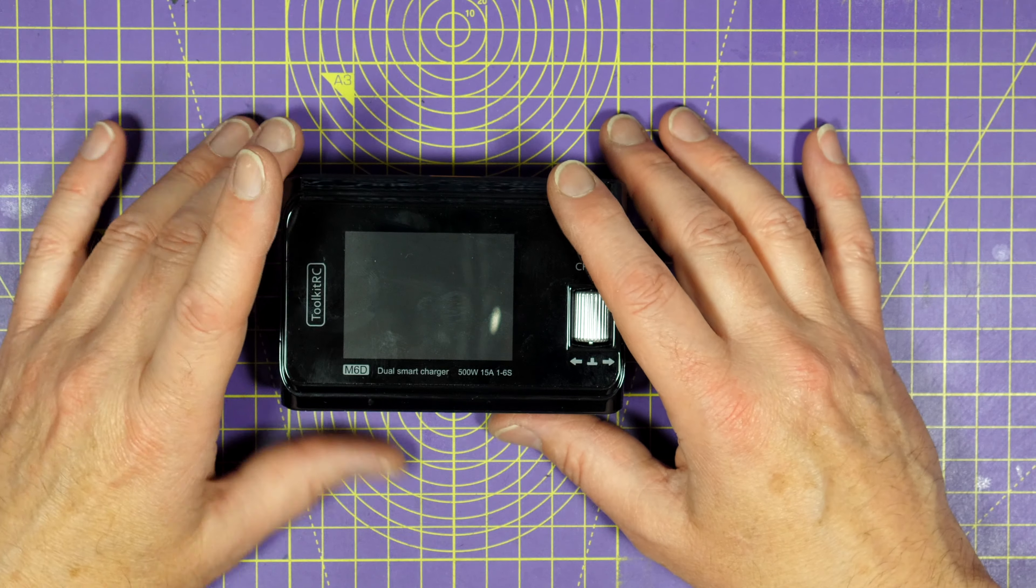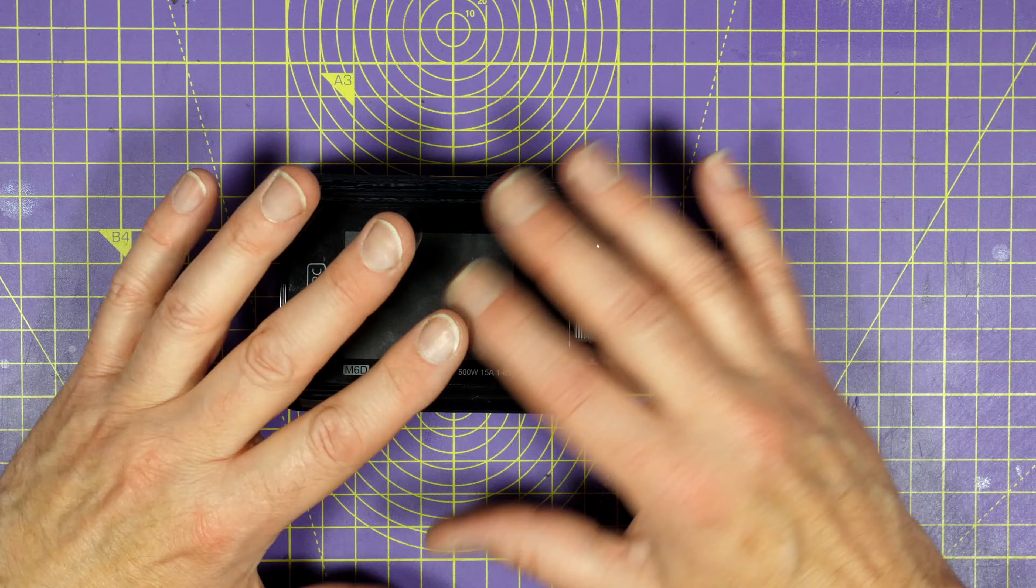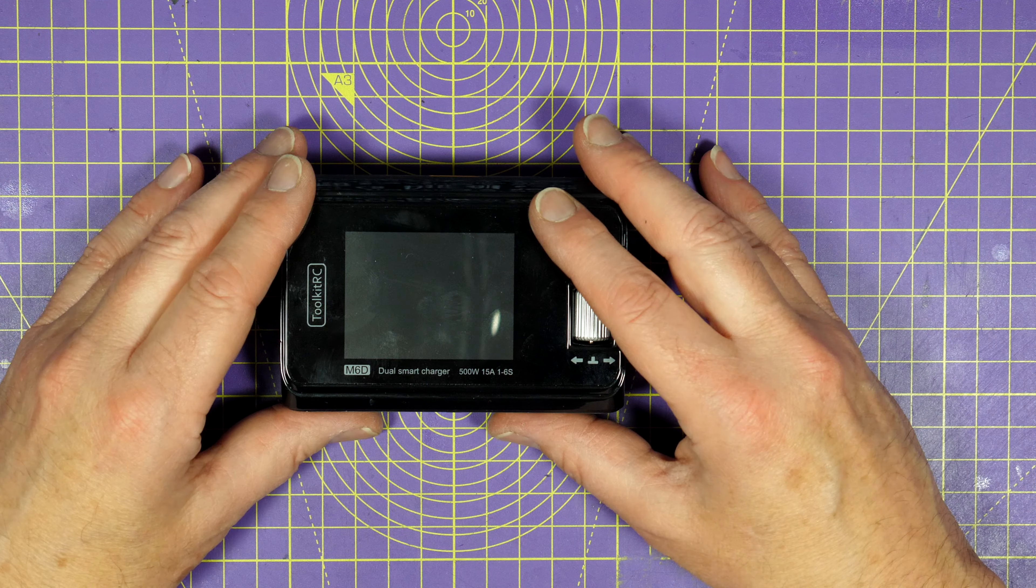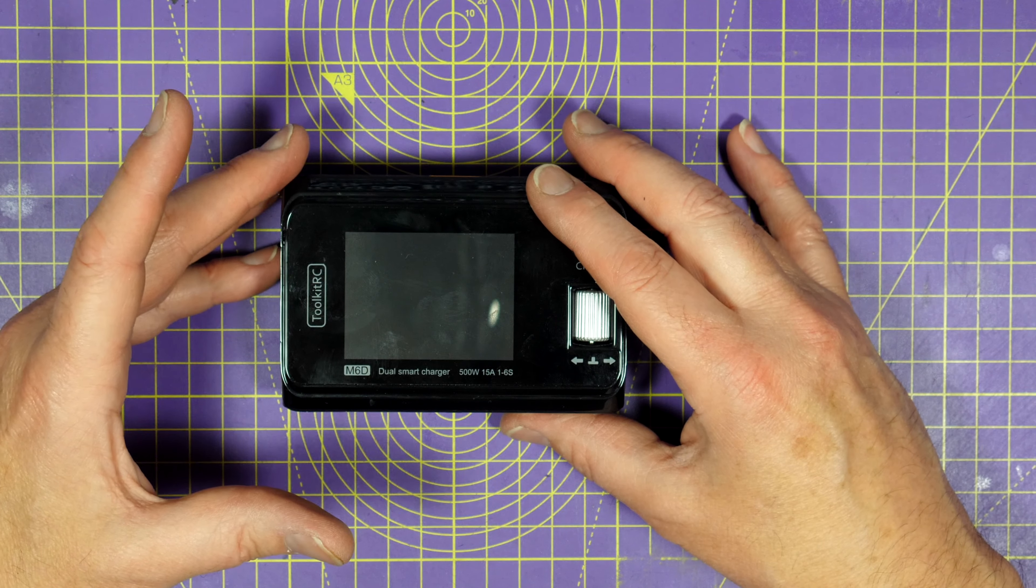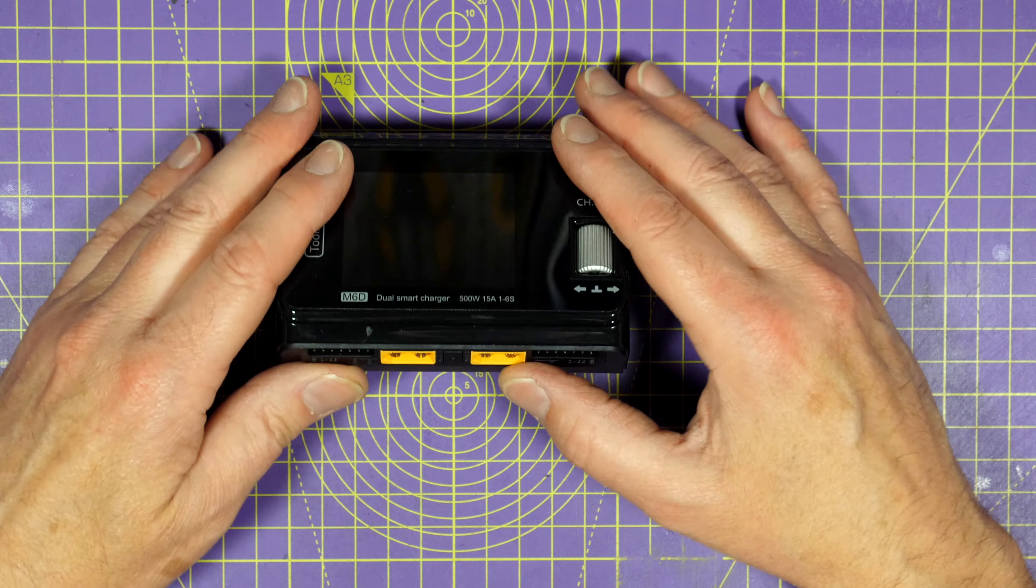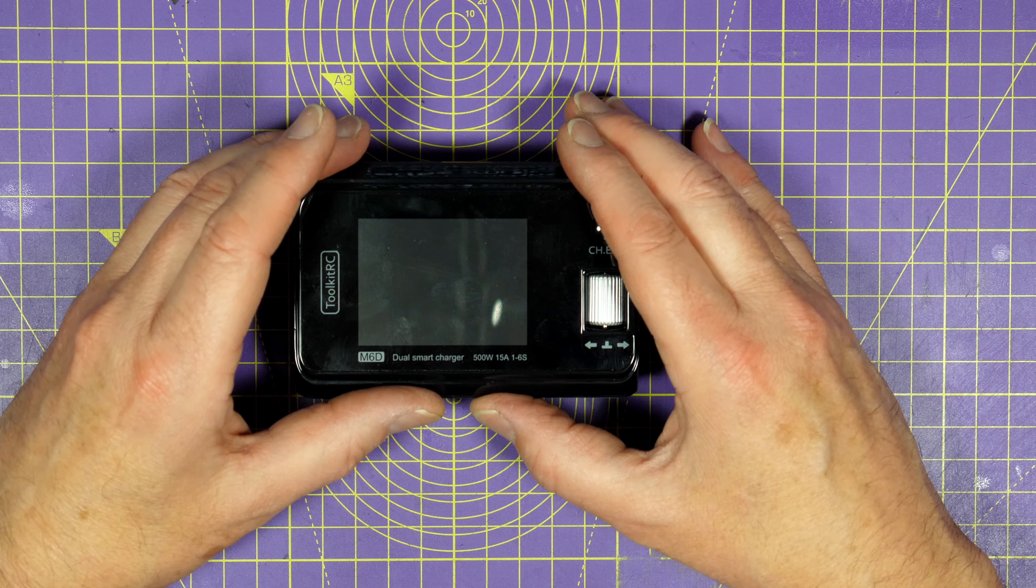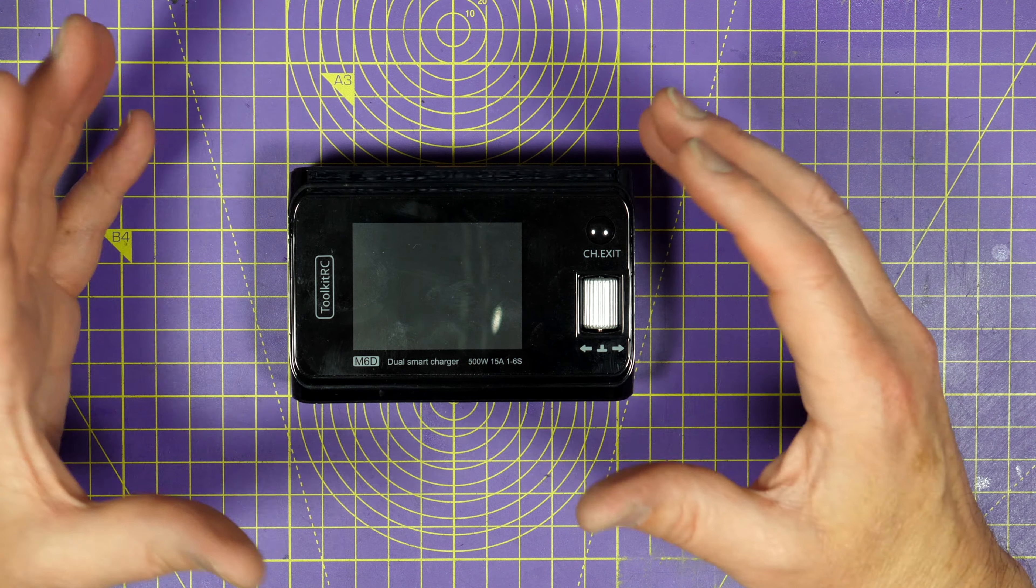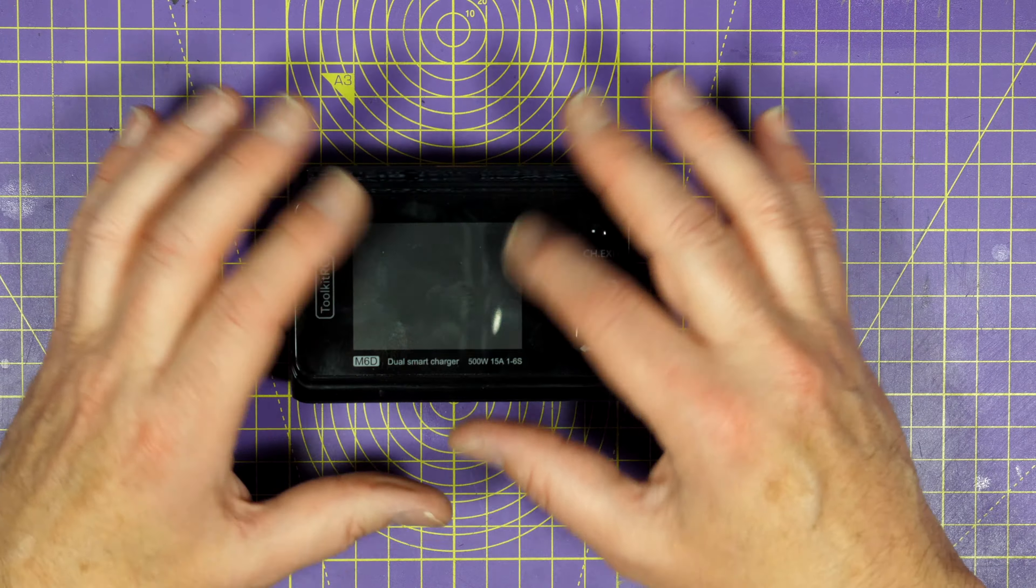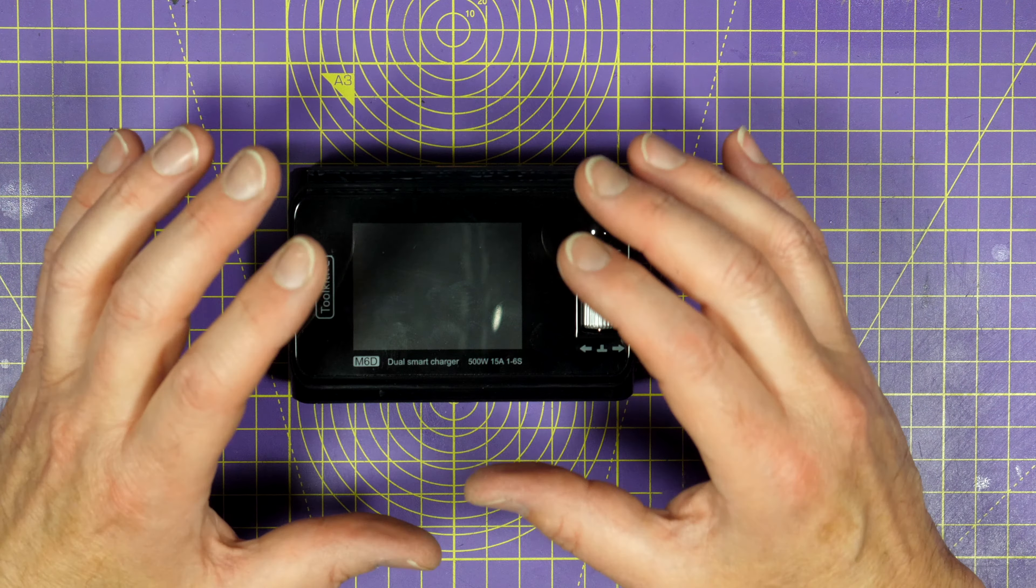First a quick rundown on the specs on this. It's a two channel charger so it's sort of like having two separate chargers but all in one box powered by one source. And it's rated at 500 watts at 25 amps for a single channel and 15 amps if you're using both channels. Depending on the batteries you're trying to charge and the current you've set for each one, this will intelligently distribute the power between the channels. And I'll talk a bit more about that later.